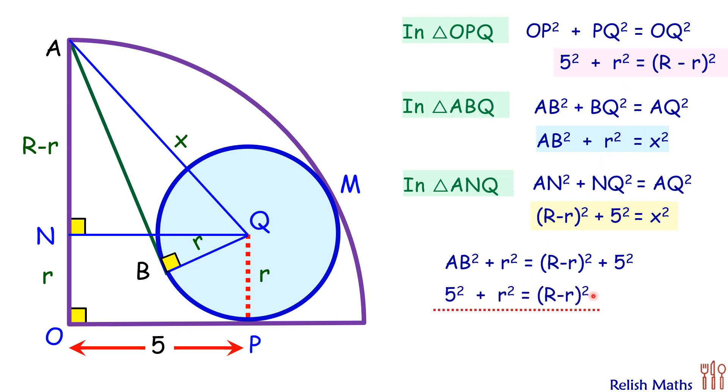When we are subtracting, r² will get cancelled down, and (R - r)² will also get cancelled down. On simplifying, we will get AB² - 5² = 5². Taking 5² on the other side, we will get AB² = 2 × 5².